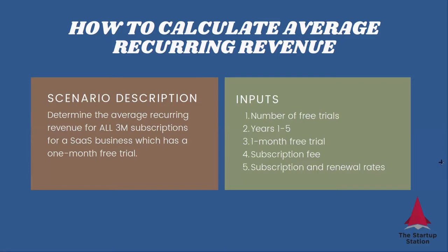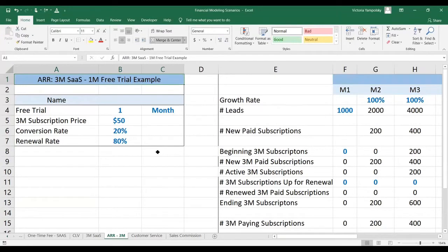What we need to know in order to determine that is the number of free trials for years one to five, the length of the free trial which is one month, the subscription price, and the subscription and renewal rates. Here we're going to calculate average recurring revenue for three-month subscriptions with a one-month free trial.